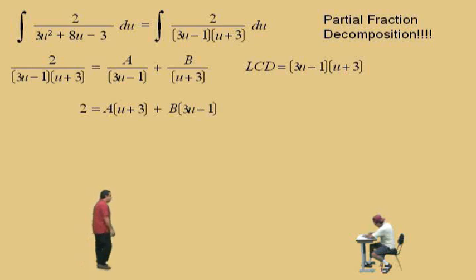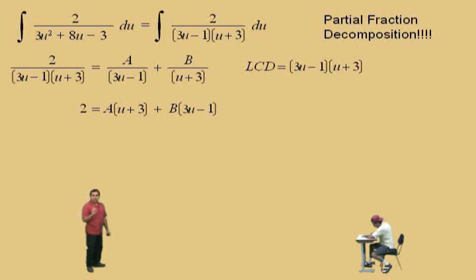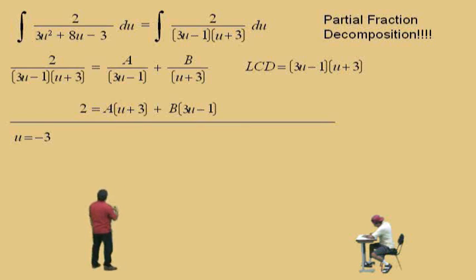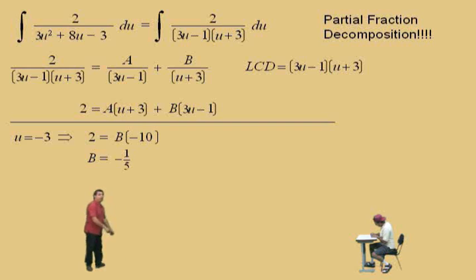Now we have to solve for A and B. There are two techniques: the elimination method by choosing values of u that will eliminate A or B, or you can equate terms. We're going to eliminate terms by choosing values of u. First, we're going to eliminate A by choosing u equal to negative 3. When we plug that in, we get 2 equals B times negative 10. Solving for B, we get negative one-fifth. We have our B value now.